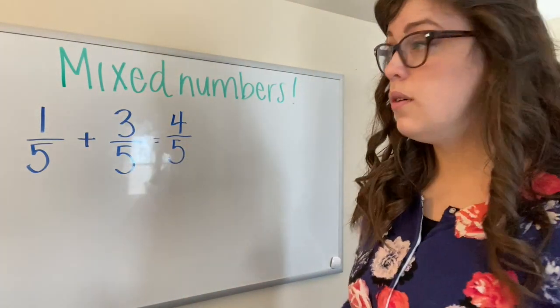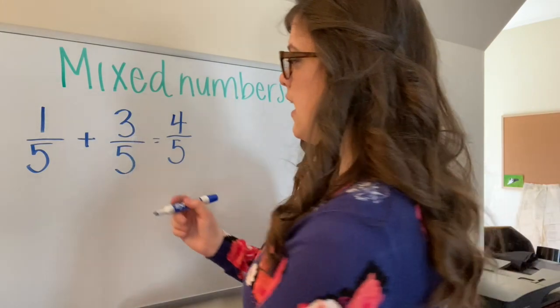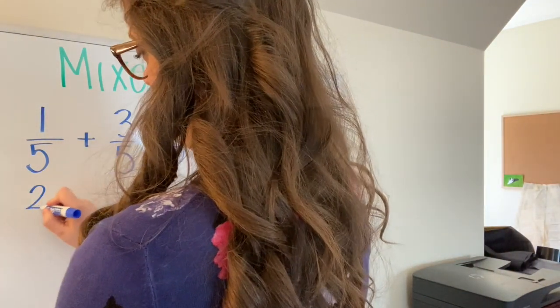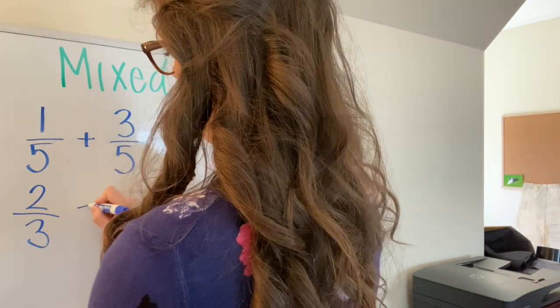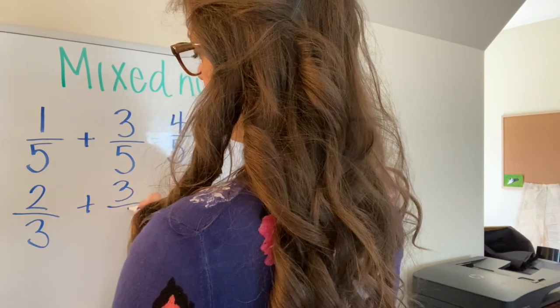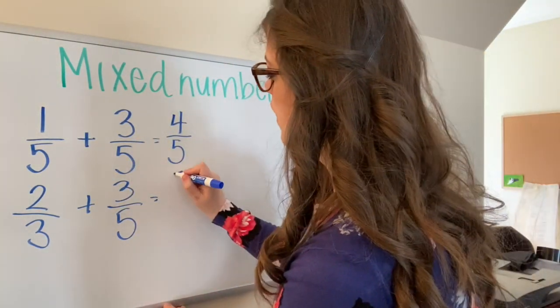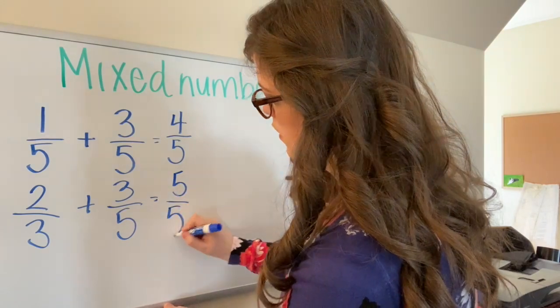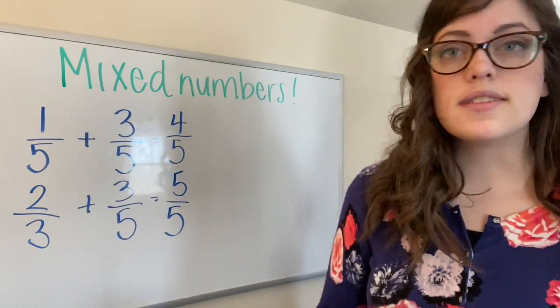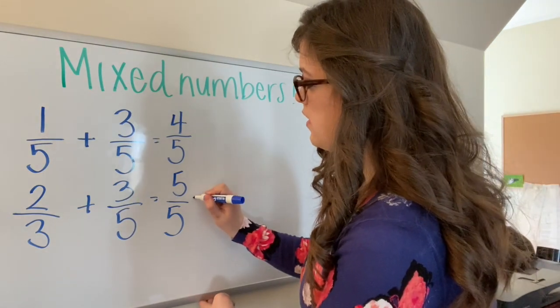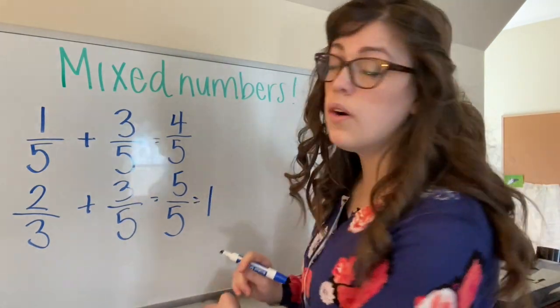I also know from what we learned yesterday that if I add two fifths plus three fifths, that's going to give me five fifths. And since the numerator and the denominator are the same, five fifths is equal to one whole.